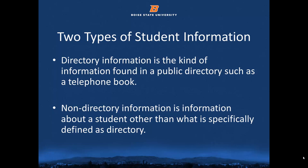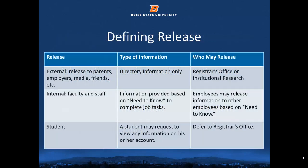FERPA and Boise State policy define two types of information about students: directory information and non-directory information. Directory information is the kind of information found in a public directory such as a telephone book. Non-directory information is any other information about a student. These will be defined specifically later in this video. When dealing with confidential student information, it is always best to defer to the experts — the registrar's office or institutional research.